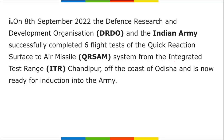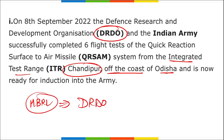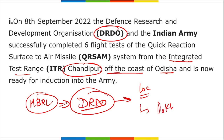DRDO also test-fired an enhanced range Pinaka Multi-Barrel Rocket Launcher at Pokhran, Rajasthan. The DRDO Chairman is G. Satheesh Reddy and the headquarter is in New Delhi. Remember: DRDO completed the sixth flight test of QRSAM and successfully tested the Pinaka rocket launcher at Pokhran, Rajasthan.